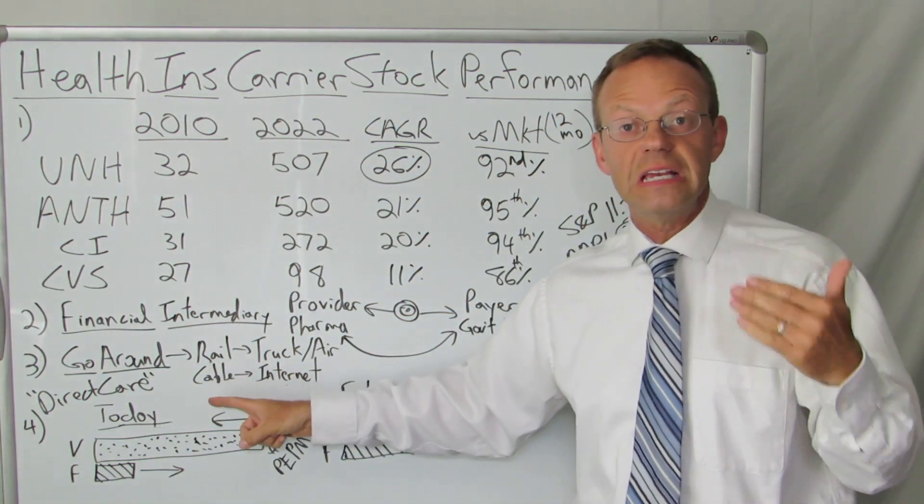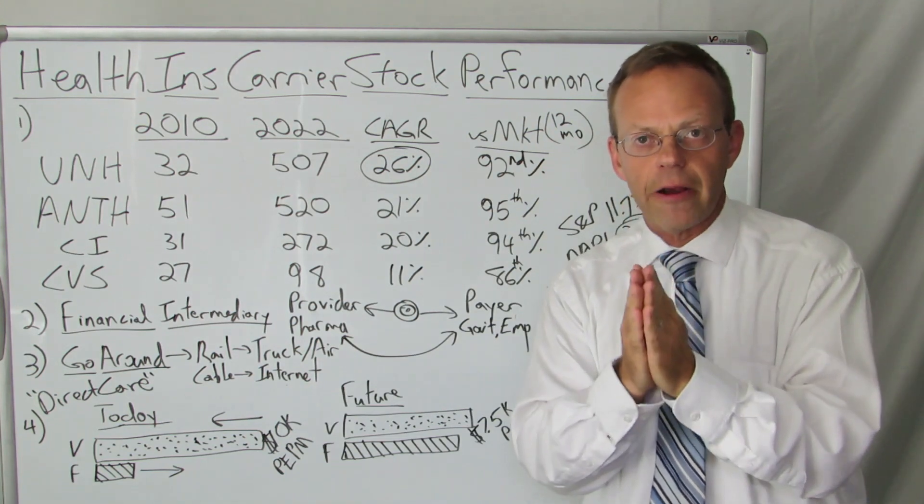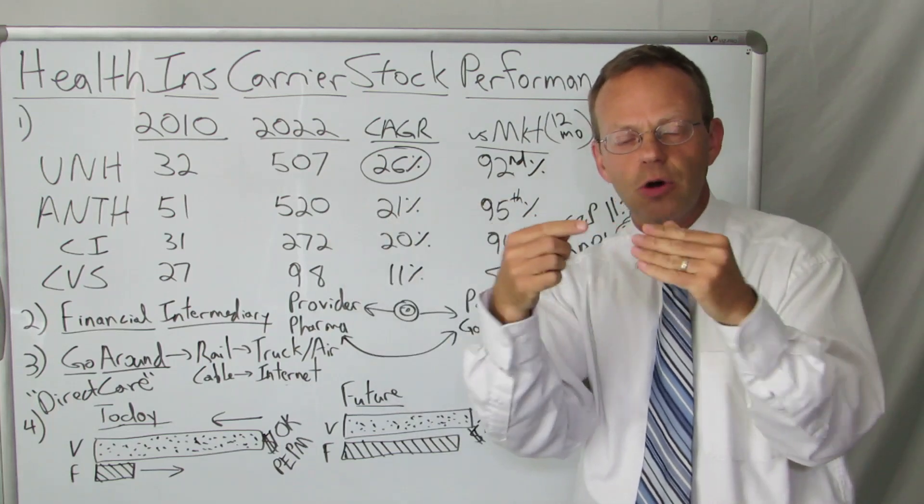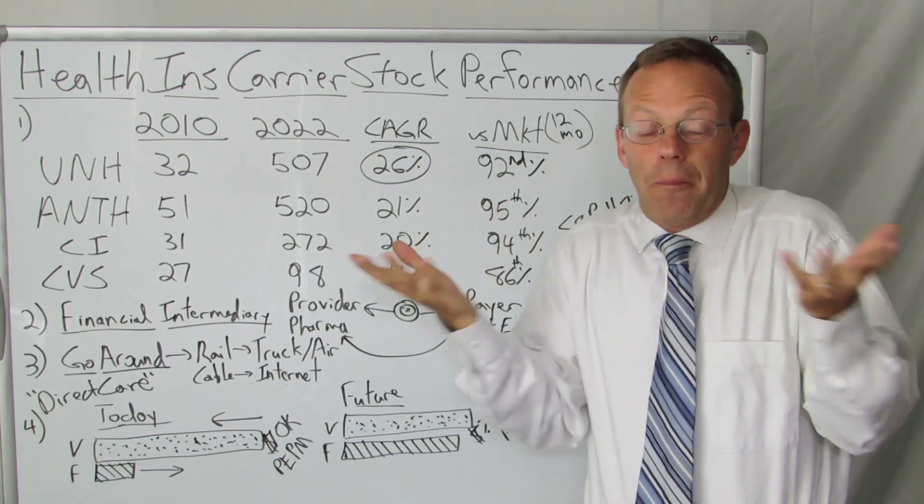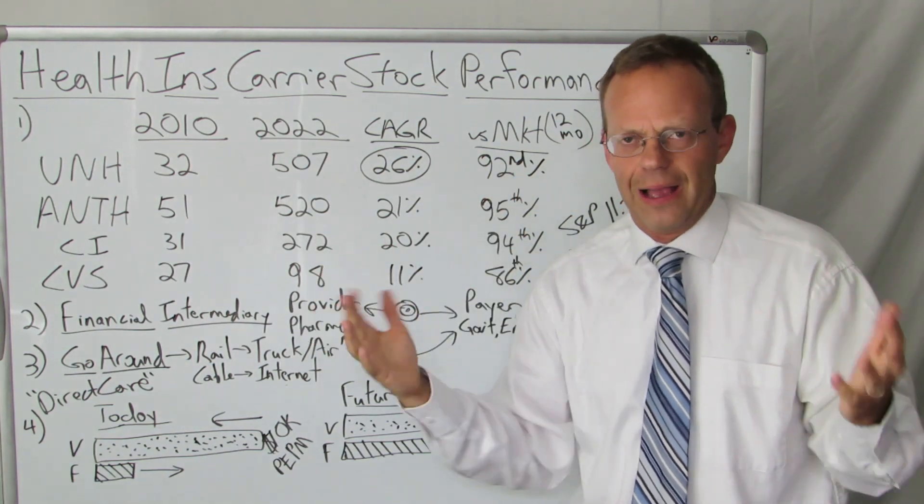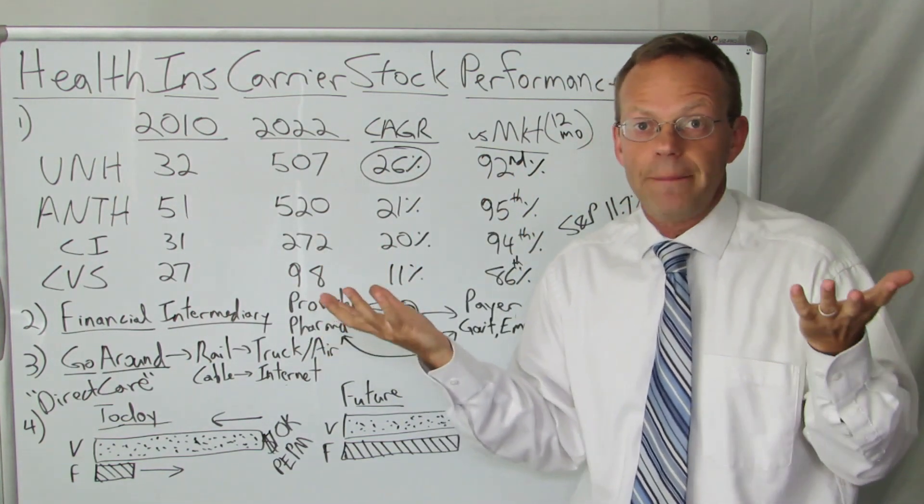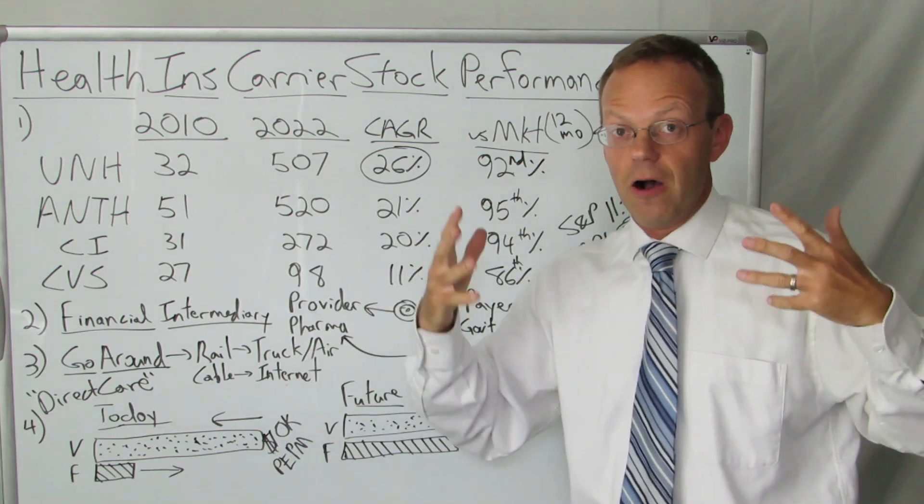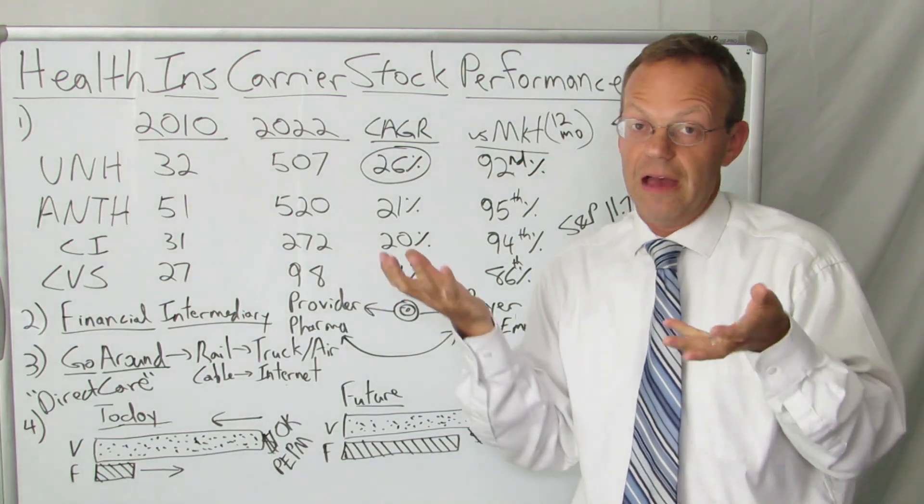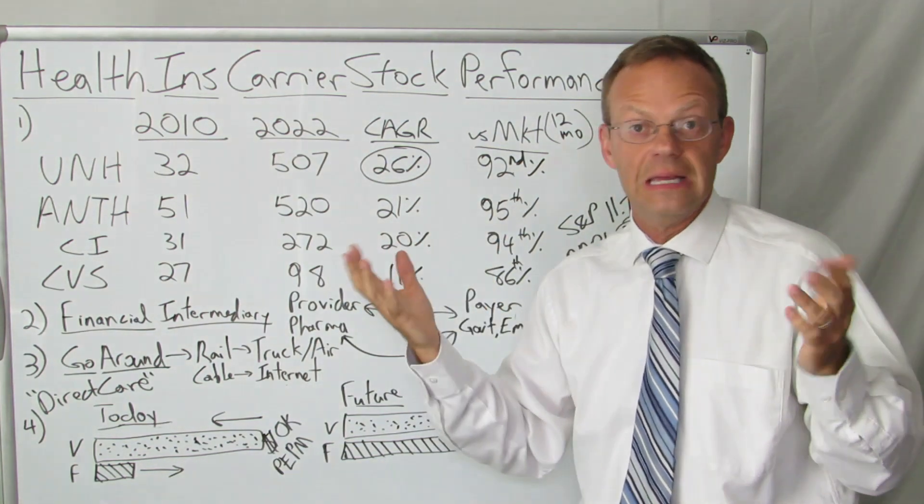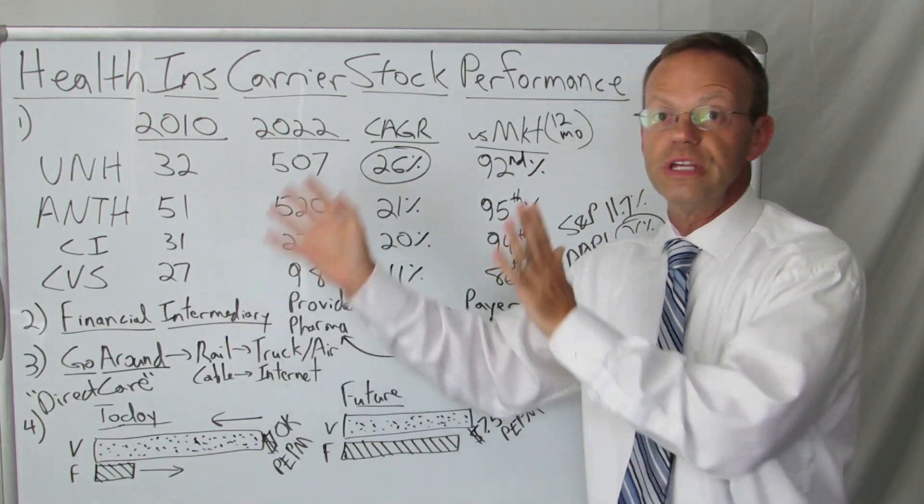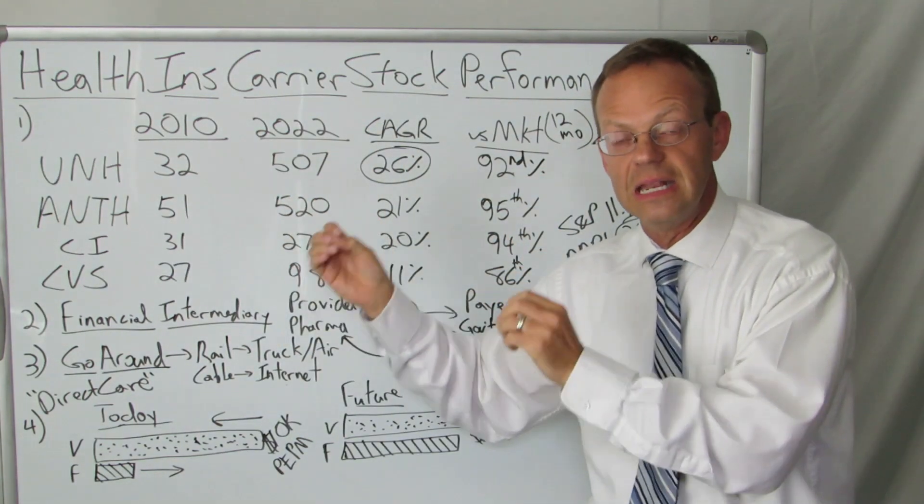Next example, cable TV. It was the intermediary between video content and the consumer. It had to go through the cable pipes. Nobody likes the cable company, right? What happened? The internet happened. And now you can get content without having to go through the cable. In fact, many people have gotten rid of the cable completely. And the same thing is likely to happen to these health insurance companies in healthcare.